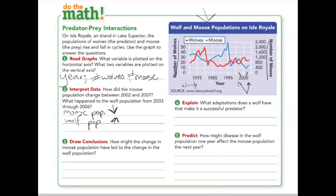Question three asks how the change in moose population might have led to the change in the wolf population. As moose increased — providing more food — we can see a spike in the wolf population. So around that same time the moose population skyrocketed a bit, more food was available, and the wolf population could increase as well.